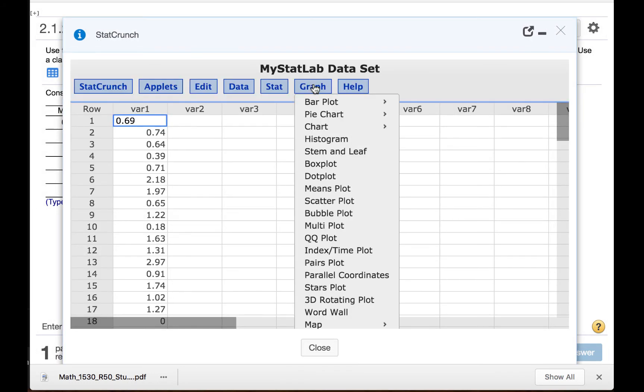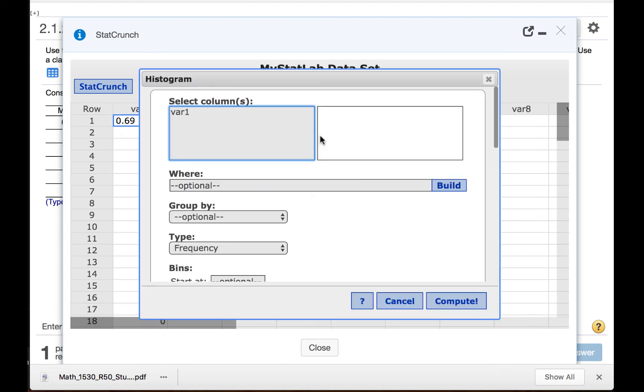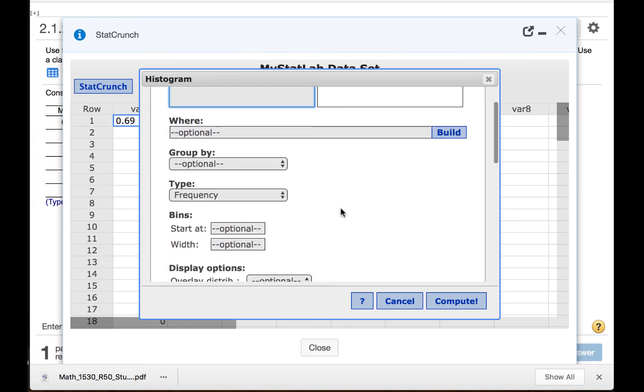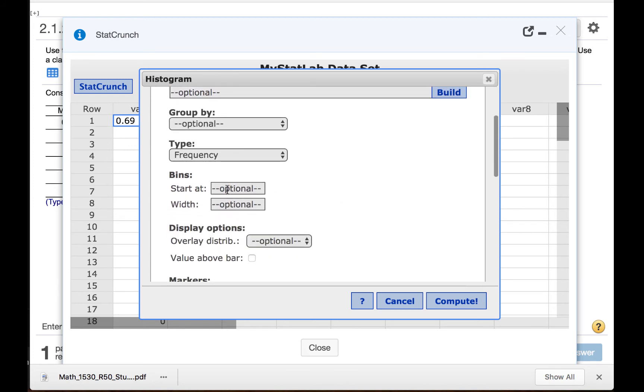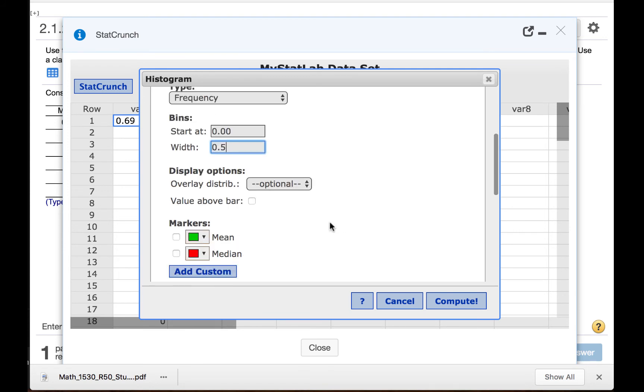We will click graph, histogram, and then click variable 1 so that it appears in the active box. We were told to start the dataset at 0.00 and to use a width of 0.5. Next we will click value above bar and click compute.